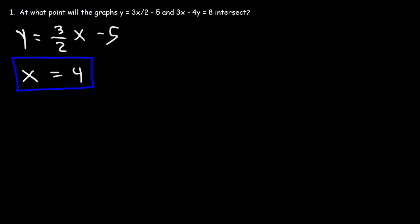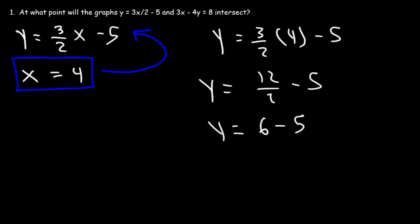Now our next step is to determine the y-coordinate. So let's plug in x into that equation. So y is going to be 3 over 2 times 4 minus 5. 3 times 4 is 12. 12 divided by 2 is 6. And 6 minus 5 is 1. So y is equal to 1. So we can write the point as 4 comma 1. So this right here is the point of intersection.